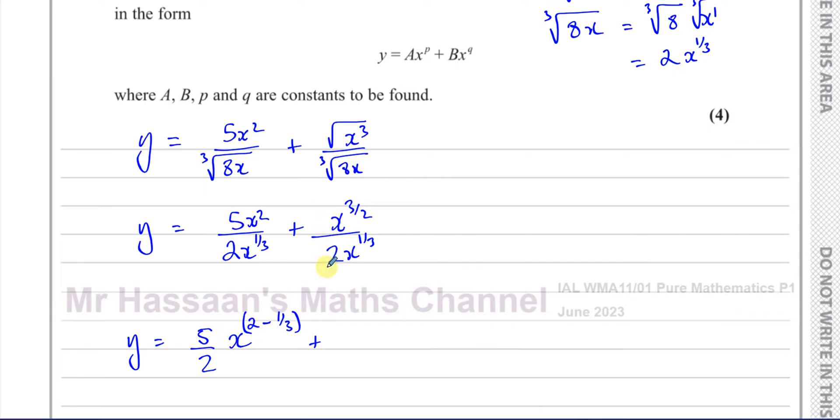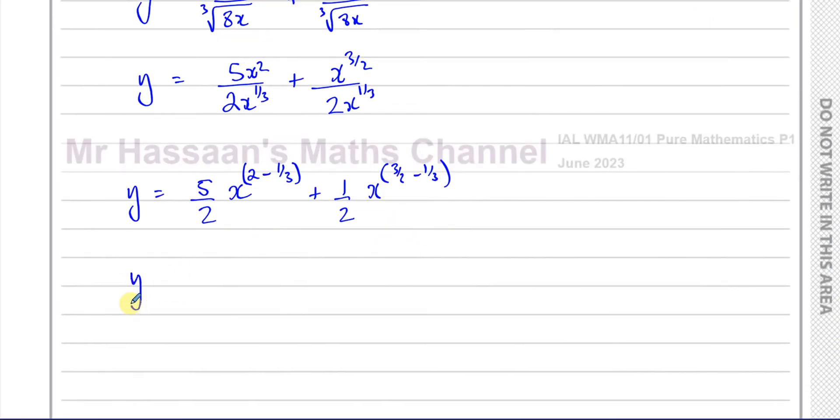Similarly over here, we're going to have 1 over 2, and we have x to the power of 3 over 2 take away 1 third. So we have y equals 5 over 2 times x to the power of - now 2 minus 1 third.